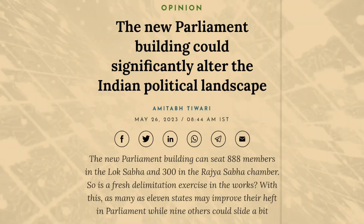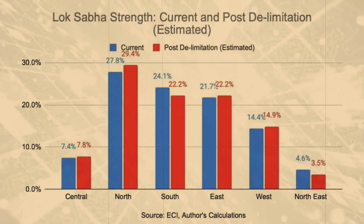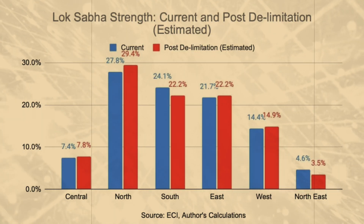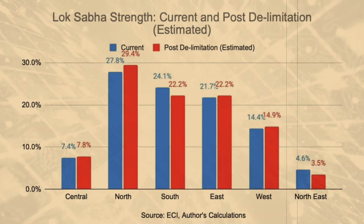In this case, there is a delimitation process for the parliament in India. They are going to be saying that there was going to be a delimitation process for the parliament. They are going to be saying that there is still a delimitation process for the parliament. In the case of the government, they are going to be saying that there are still the details of this parliament.